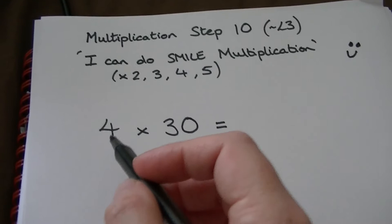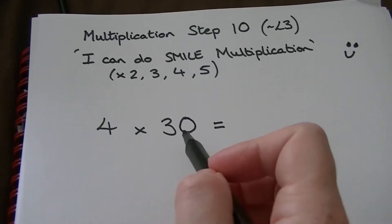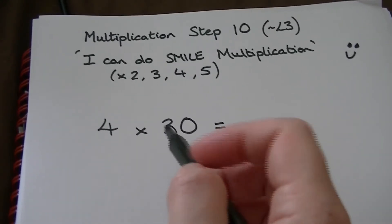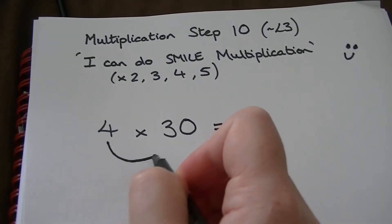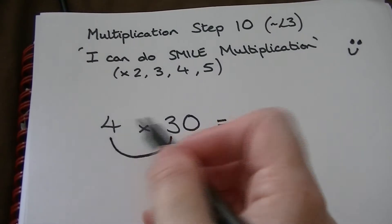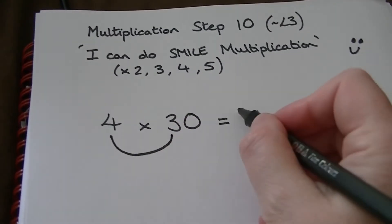Here we've got 4 multiplied by 30, 4 times 30. When we do smile multiplication we draw a smile underneath the two numbers that we can already do because we know that 4 times 3 is 12.